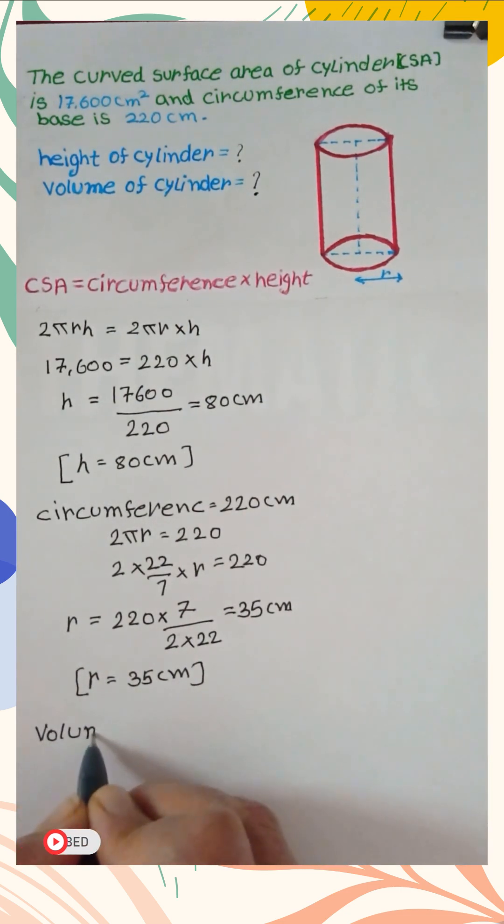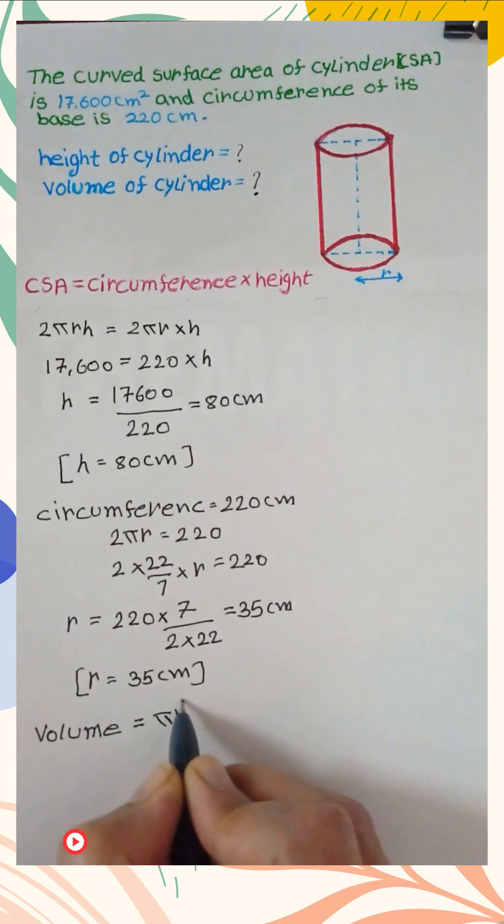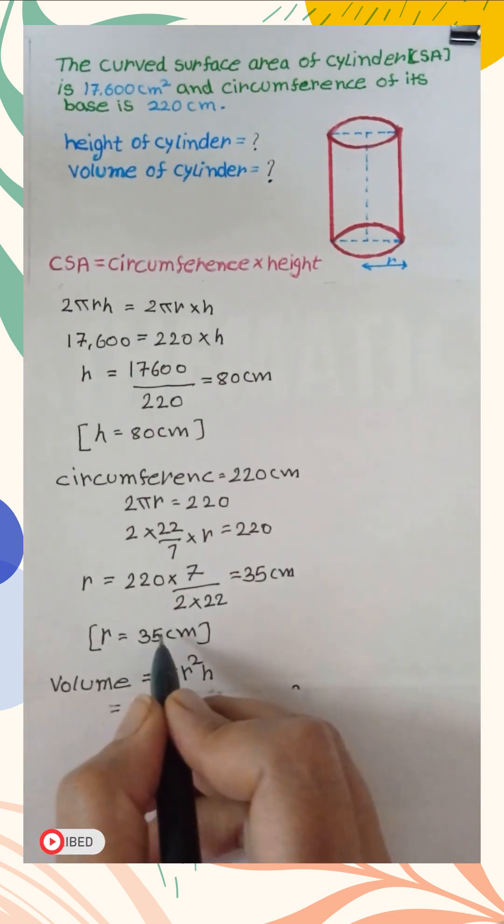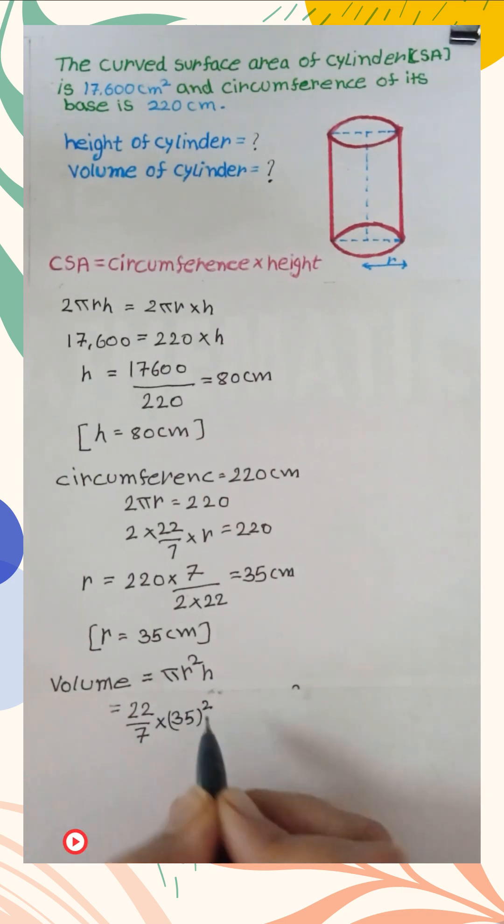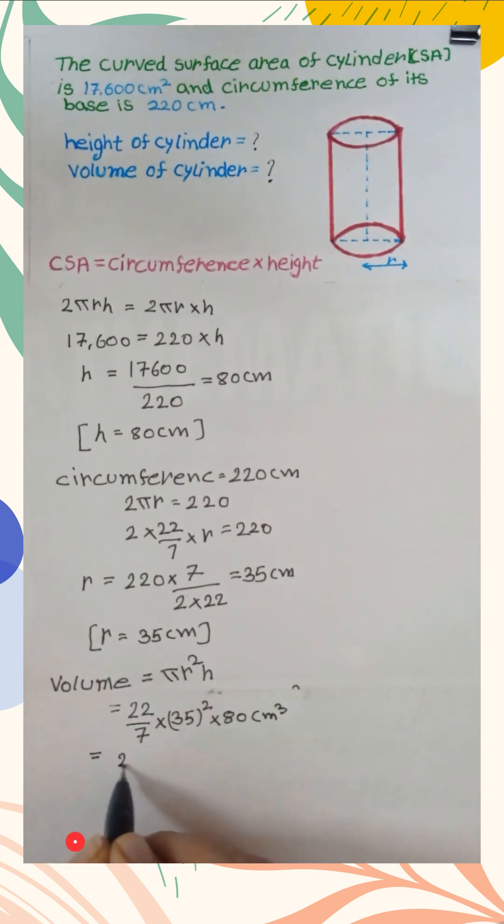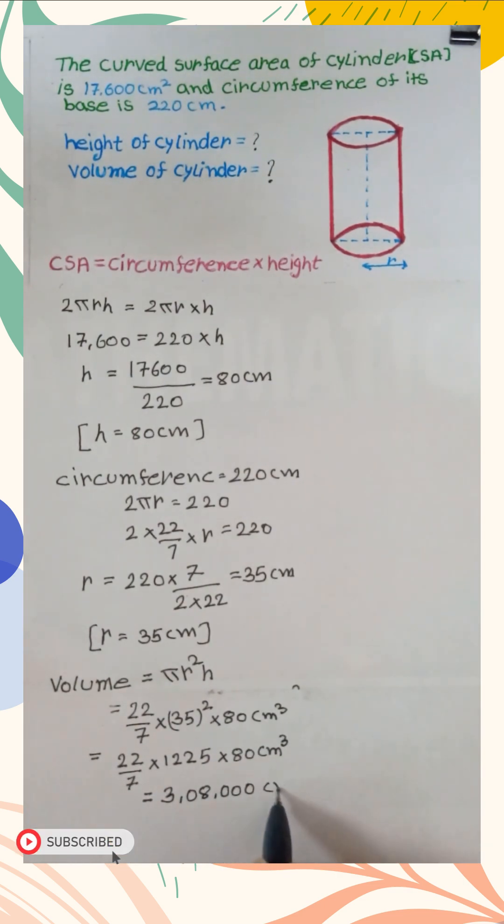Now we find the volume of the cylinder, which is π × radius² × height. Put the value of height and radius which we found earlier. Volume of the cylinder is 308,000 cm³.